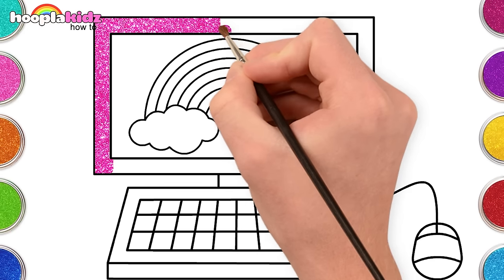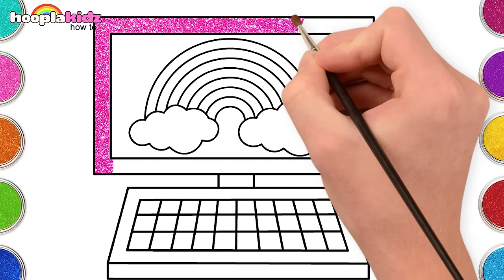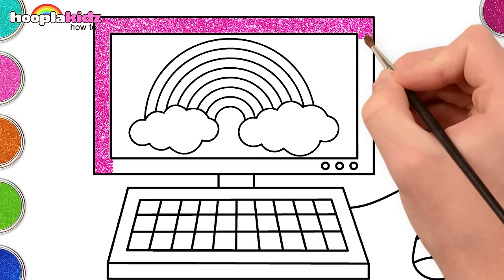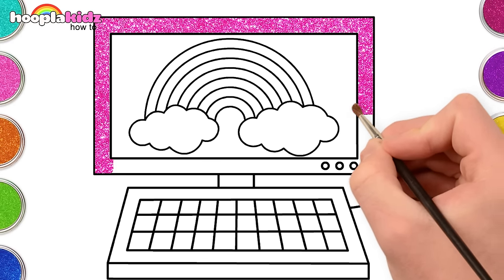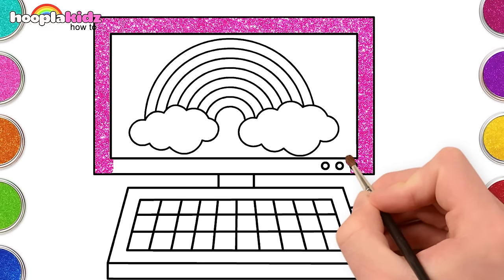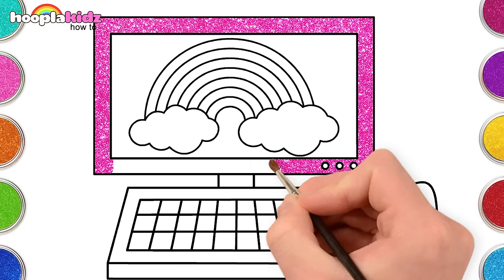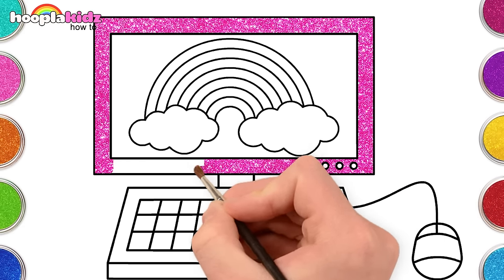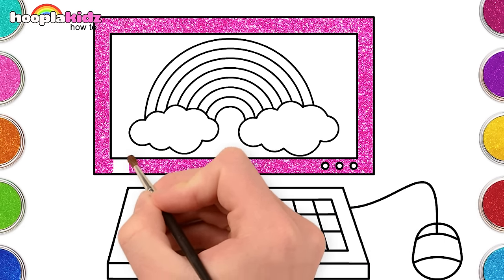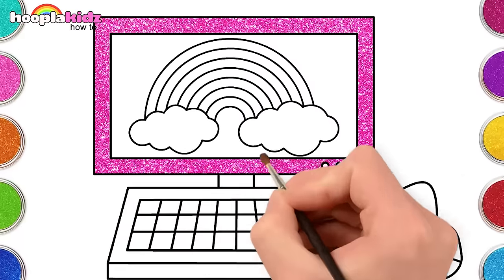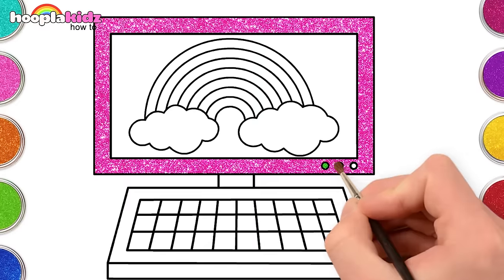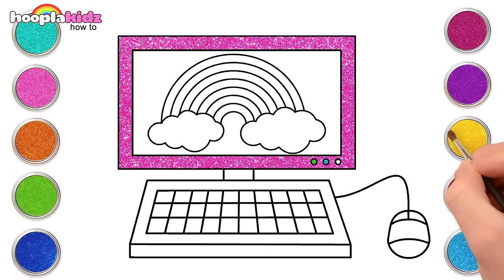This part of the computer is called the monitor. And this is where we see all the pictures and read all the words. Do you have a computer at home? How about a phone? Mobile phones are just like mini computers. Green now for the one button and blue for the next.